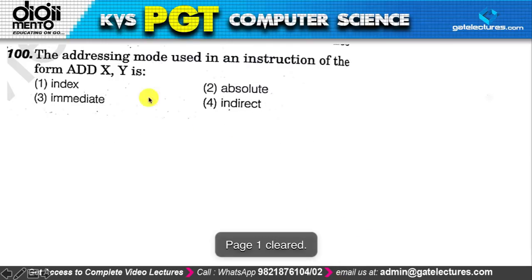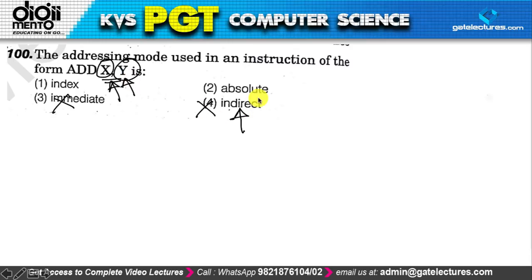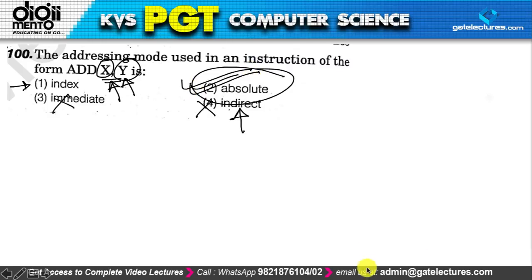Question 100: what addressing mode is used in the instruction 'add x, y'? Here x and y are addresses of locations from which data is to be accessed — it is not immediate addressing (which uses direct values) and not indirect addressing (which uses pointers to addresses). Index addressing is used for array access. The correct answer is option 2, which is absolute addressing mode.